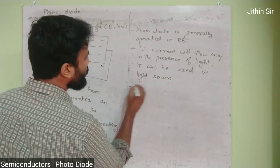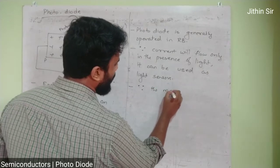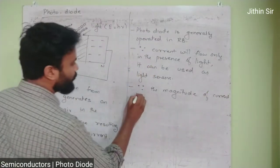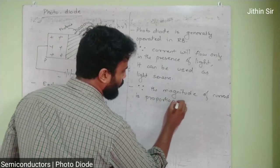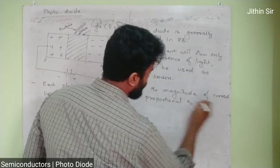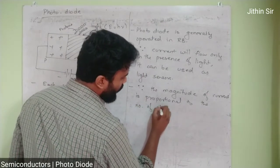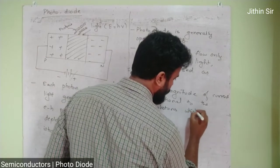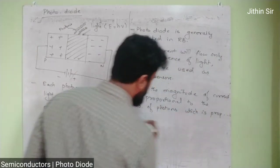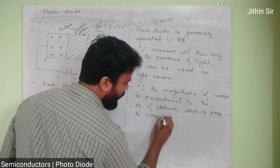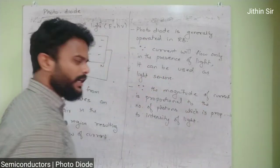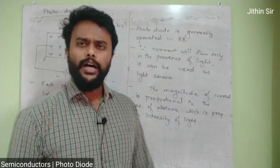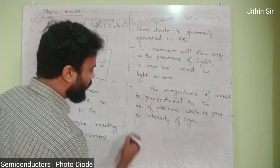One more thing — since the magnitude of current is proportional to the number of photons, and the number of photons is proportional to the intensity of light — the magnitude of current is directly proportional to the intensity of light۔ Therefore it can also be used to measure the intensity of light۔